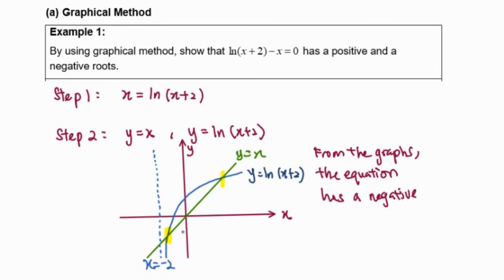The negative root occurs in the interval from -2 to 0. Meanwhile, for the positive root, it occurs from 1 to 2.